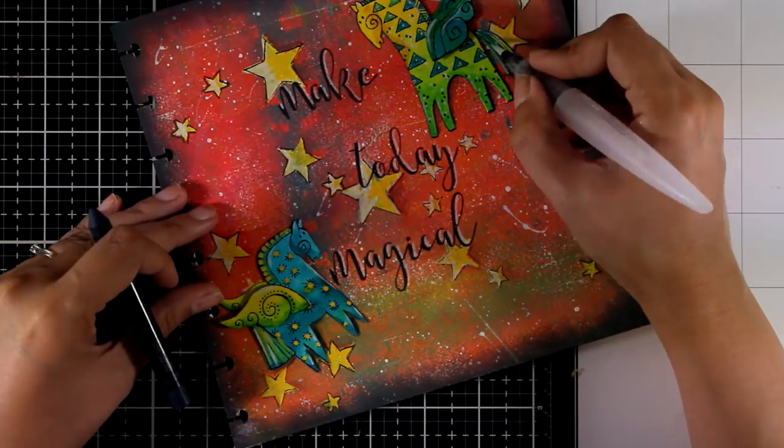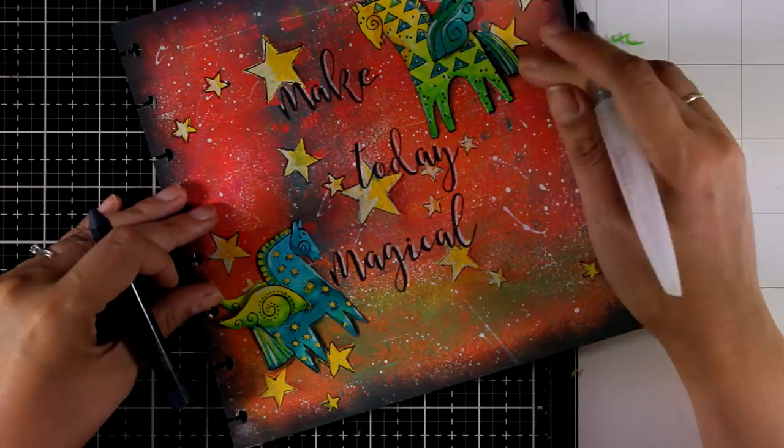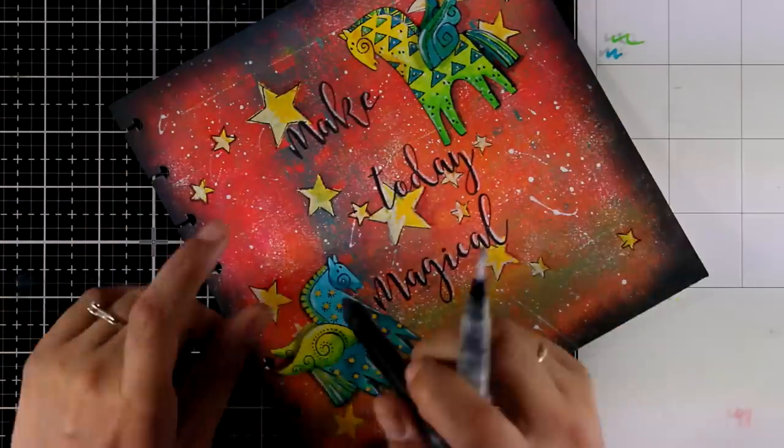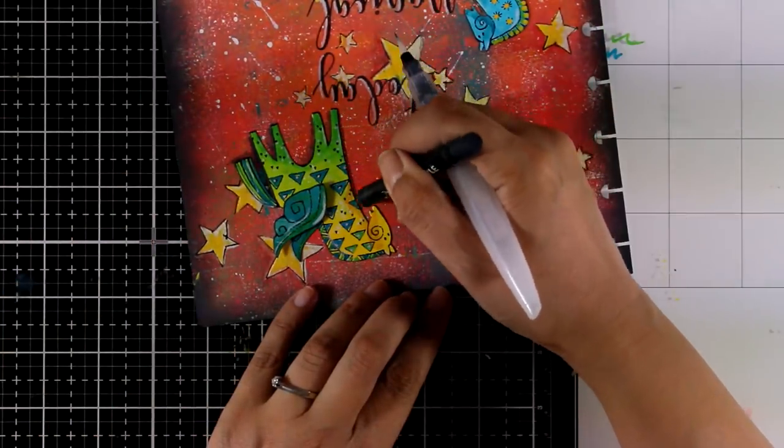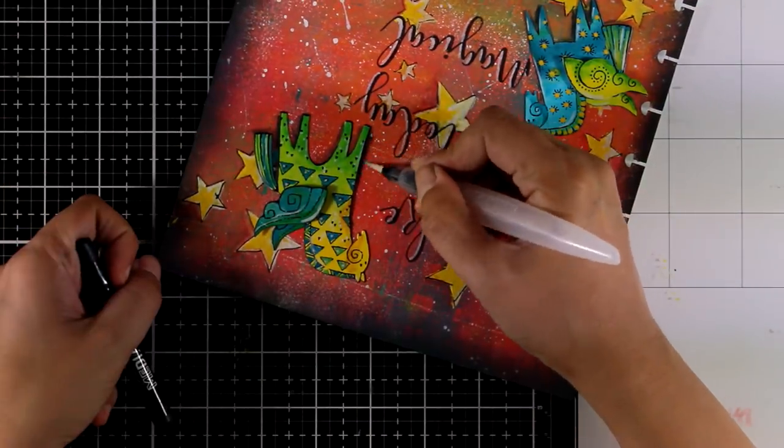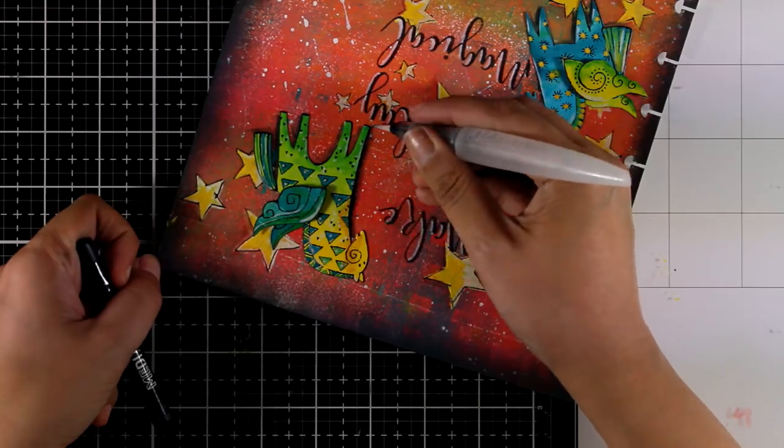I'm not going to do it all around the horse, just in different areas here and there. You can of course do the same thing for the stars if you like. I'm just going to do it for the horses in these areas.